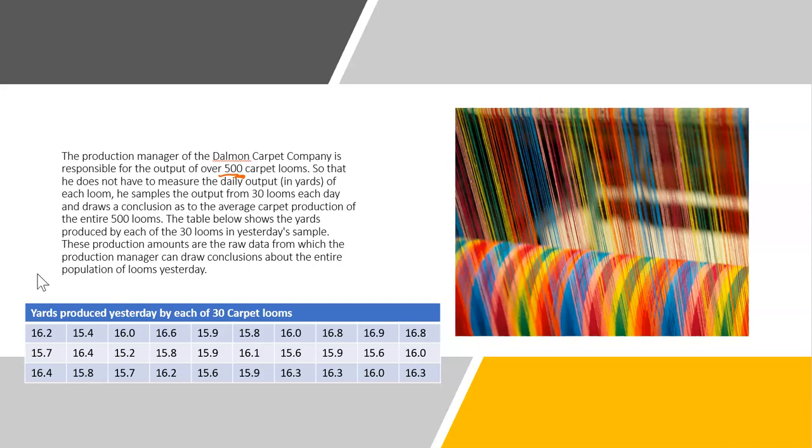But 500 carpet looms is a big number, so what he does is sample 30 looms and see the output of these 30 looms, from which he can draw inferences about the entire 500 looms. This is the average production on each day, and this average production is of 30 carpet looms.